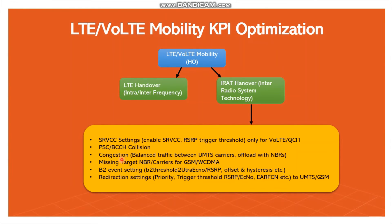For congestion — if a 2G or 3G site is congested, we have to balance the traffic within the same technology with the neighbor site. For missing target neighbor — if the neighbor site is not defined with the source LTE site, we have to add that neighbor either from GSM or WCDMA. For B2 event setting — since IRAT handover is based on the B2 event, we have to tune parameters such as B2 threshold, UTRA ECNO, RSRP, offset, and hysteresis. We can also change redirection settings like priority, trigger threshold, RSRP, ECNO, RFCL, etc., for UMTS and GSM.